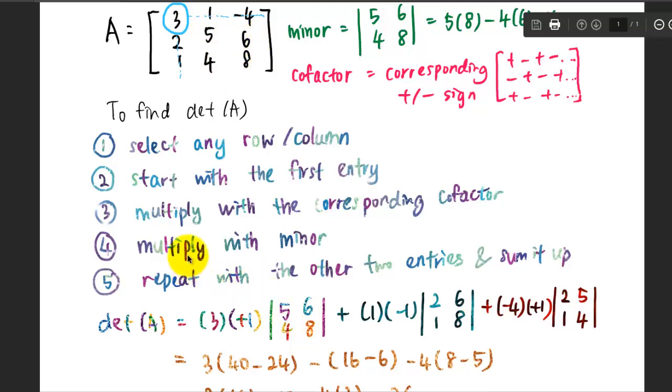Then you repeat with the other two entries and sum it up. Let's take the first row here. The next entry will be 1. So I write down 1 here and the associated cofactor sign is negative 1. The minor will be the smaller matrix. 1 is this entry here. I'm going to cover the entry along this row and column, so the leftover will be [2, 6; 1, 8]. The minor will be the determinant of this 2, 6, 1, 8 matrix.